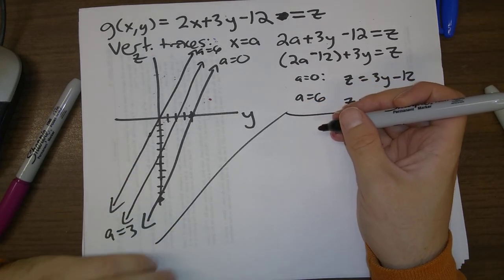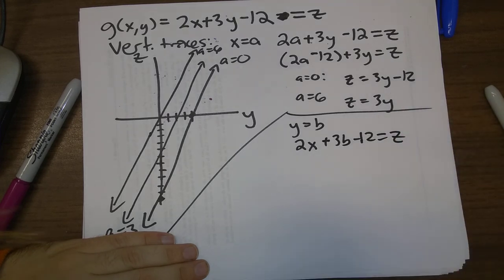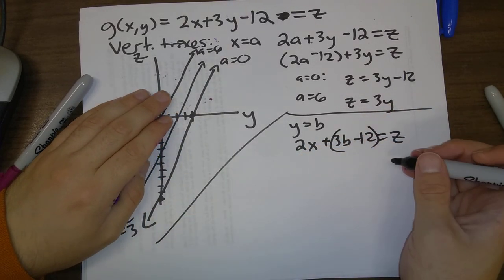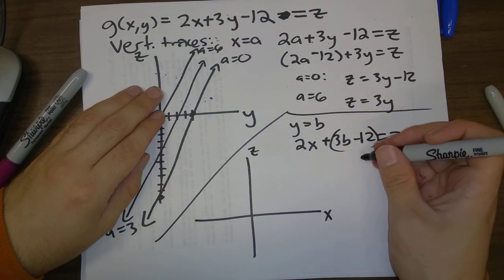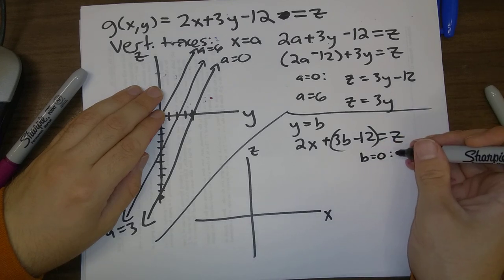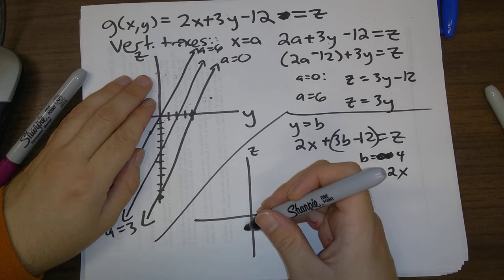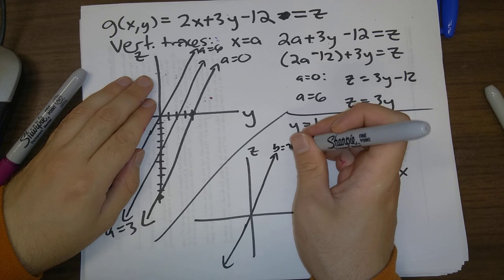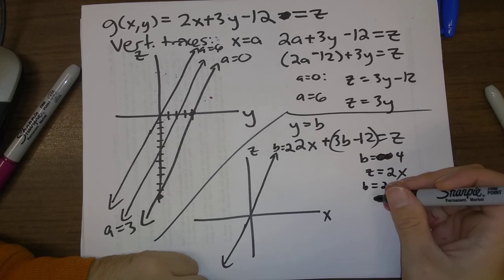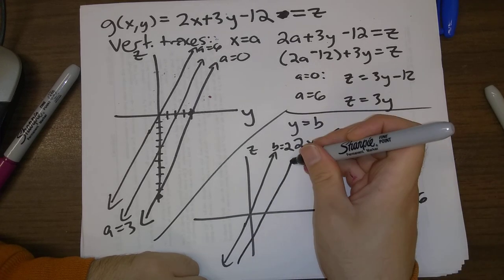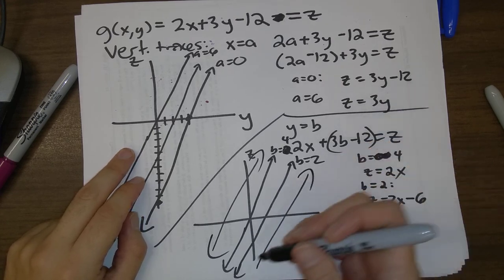Setting y equals b gives 2x plus 3b minus 12 equals z — lines of slope 2 in the xz-plane. For b equals 4, z equals 2x. For b equals 2, z equals 2x minus 6. Again, we get parallel lines all with slope 2 in the xz-plane.